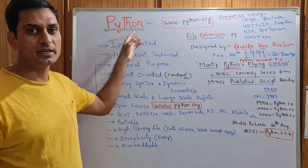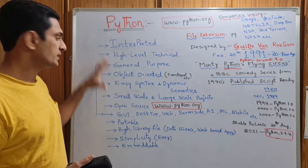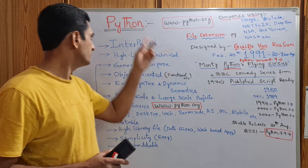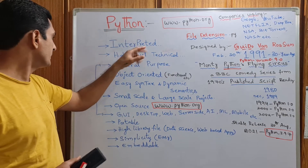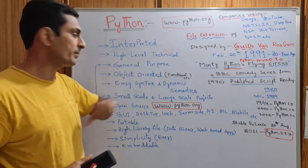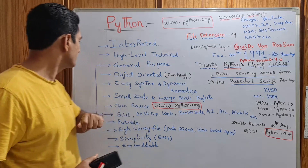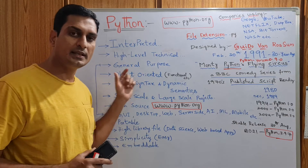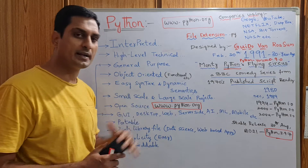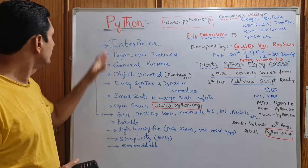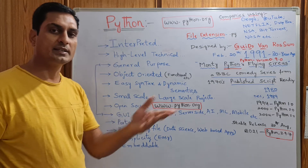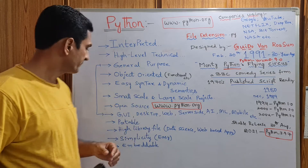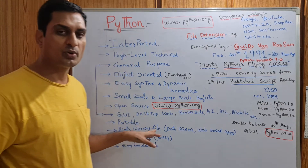I am your Prasaj. Today's topic is Python programming language. Some of its key features: Python is an interpreted, high-level, general-purpose, object-oriented programming language with easy syntax and dynamic semantics. Through Python you can design and develop applications and software from small-scale to large-scale projects. It is an open source programming language.